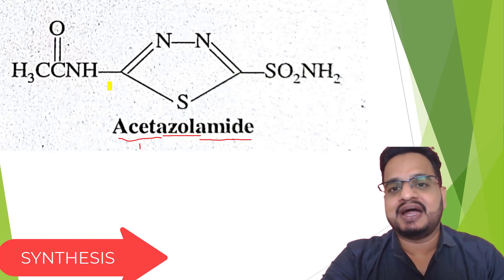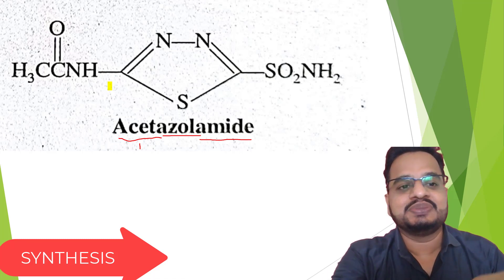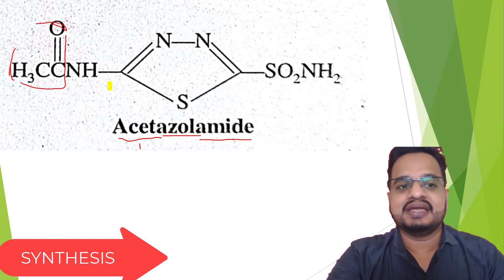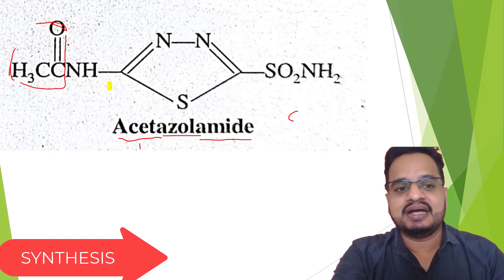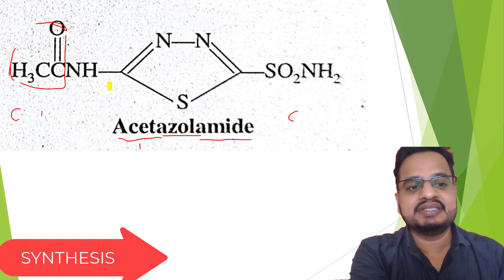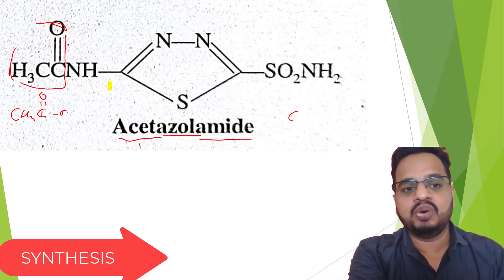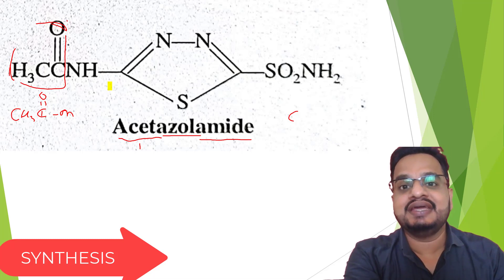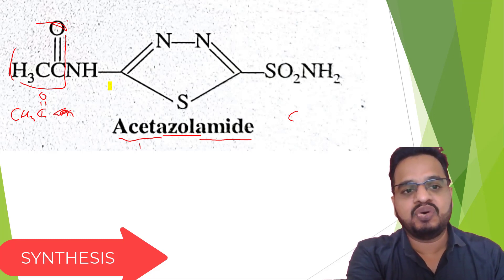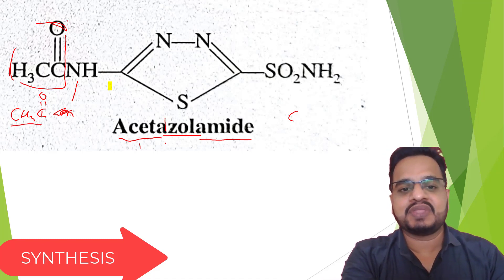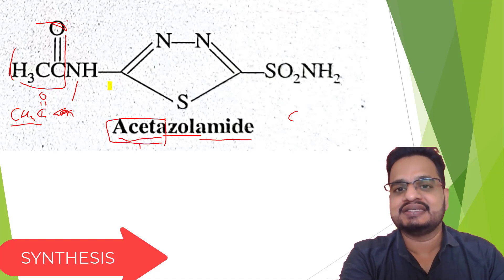The first part, 'acet', is this one. This part is your 'aceta' — it is CH3, then C double bond O. If I put one OH here, that will be acetic acid. So instead of OH, there is NH. So there is CH3CO. What is CH3CO? That is the 'aceta'. This is the 'aceta'.